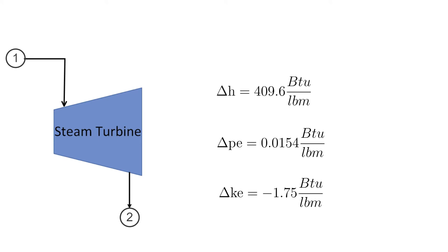The three results are shown here. As stated previously, the changes in both specific potential energy and specific kinetic energy are comparatively small when compared to the change in specific enthalpy across the turbine.